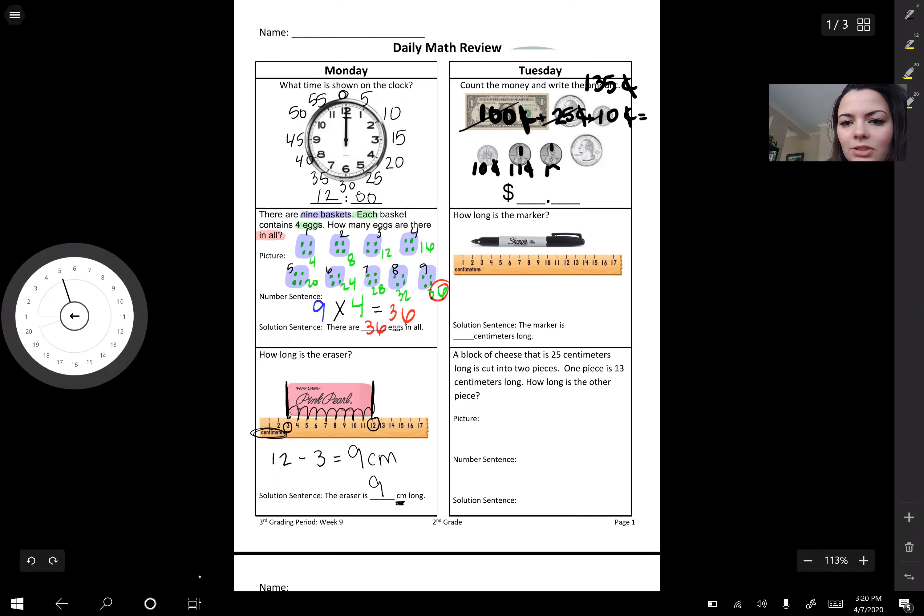Another one. Now we're at twelve cents. And then now this one is how much? Twenty-five cents. If we do twenty-five plus twelve, we don't even have to regroup. We're gonna get thirty-seven cents.